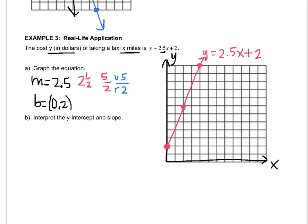Letter B, interpret the y-intercept and slope. So, what does 0, 2 mean? That's what they want to find out. You go to your labels. 0 was representing miles and 2 was representing dollars. So, 0, 2 means you haven't moved at all. 0, 2 means when you start, you have to pay $2.